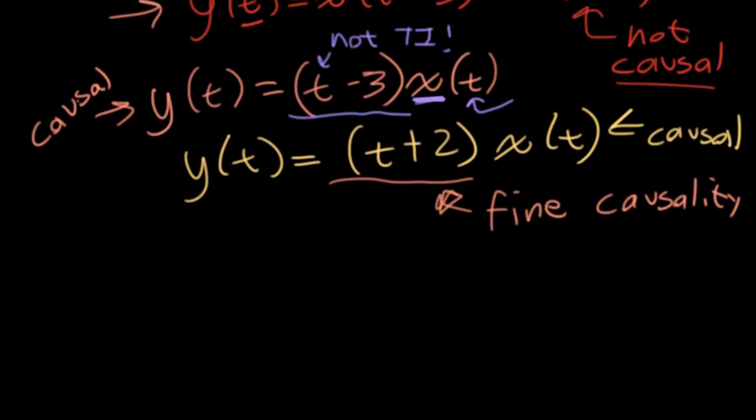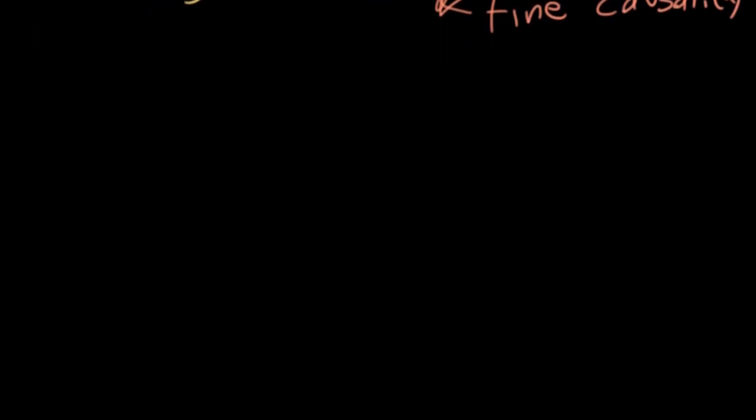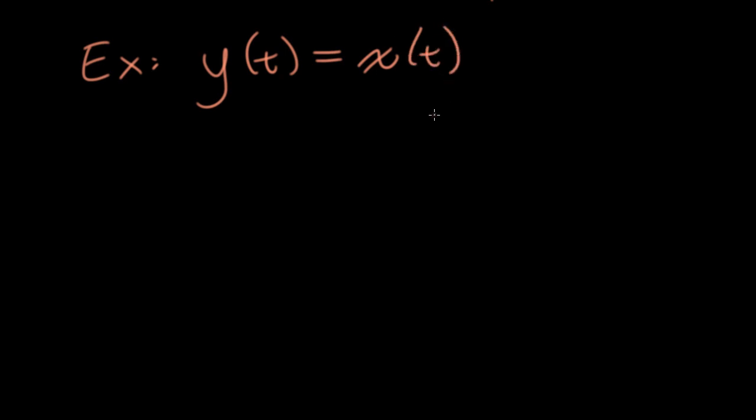Signals and systems instructors can come up with all sorts of weird systems where it can be tricky to figure out if it's causal or not. For the most part, these are not things that ever show up in real life. They're just little puzzles that professors make up. So let's look at a couple of examples. If I have an example of y(t) is equal to x(t²), is this a system that's going to show up in real life? No, but it's kind of fun to analyze.